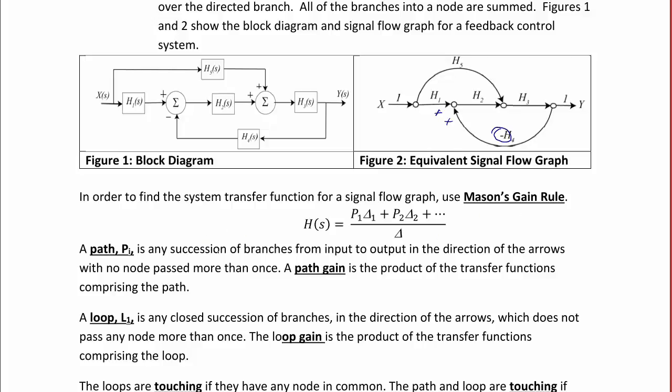A path, P_i, is any succession of branches from input to output in the direction of the arrows, with no node passed more than once. A path gain is the product of the transfer functions comprising the path.